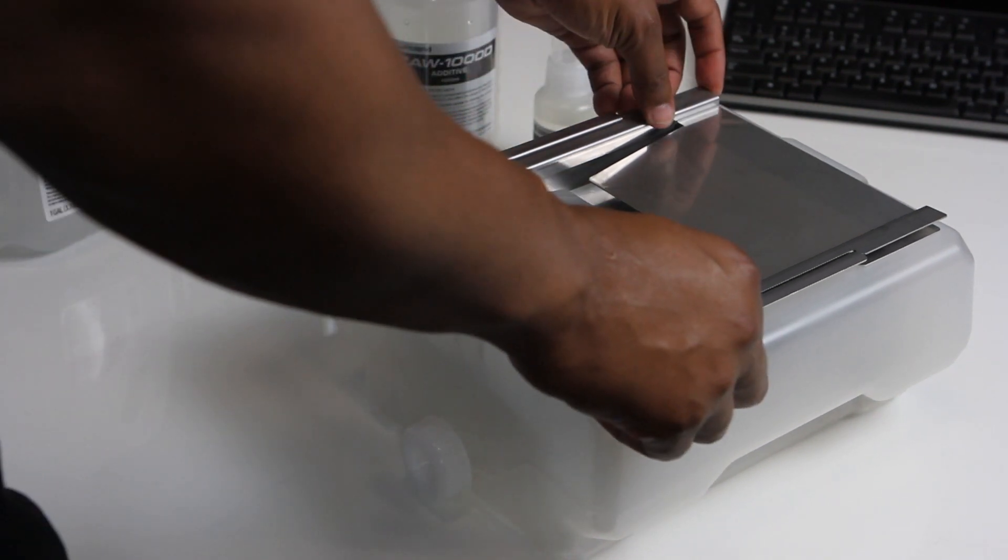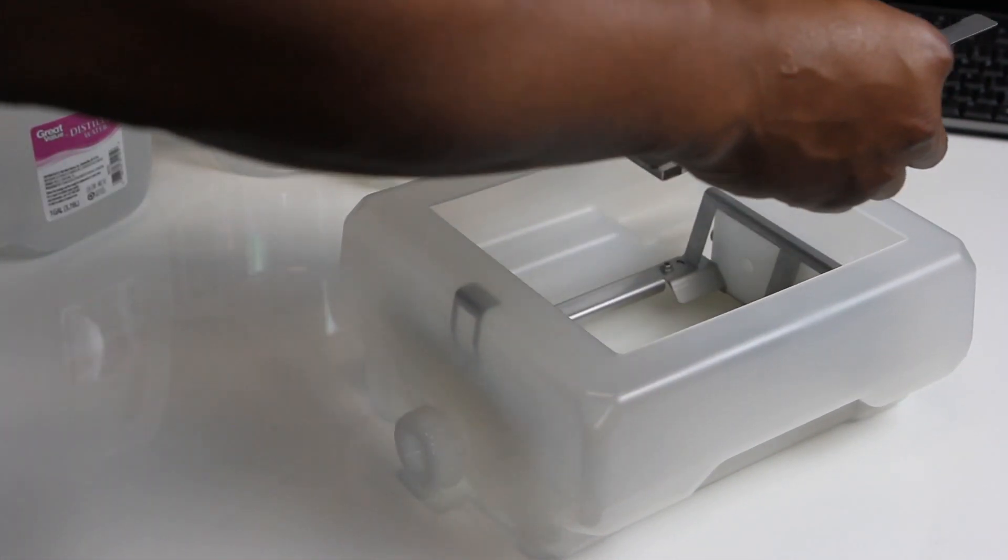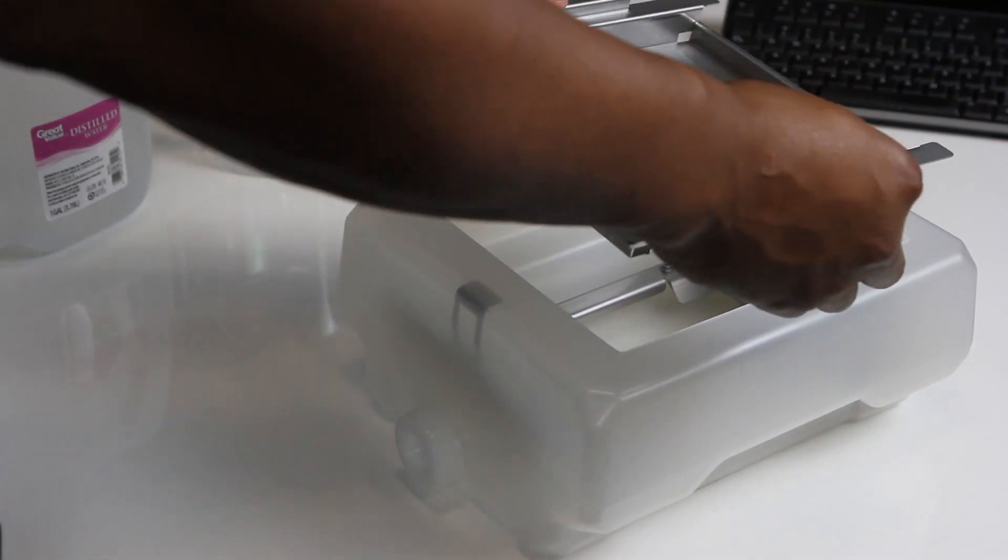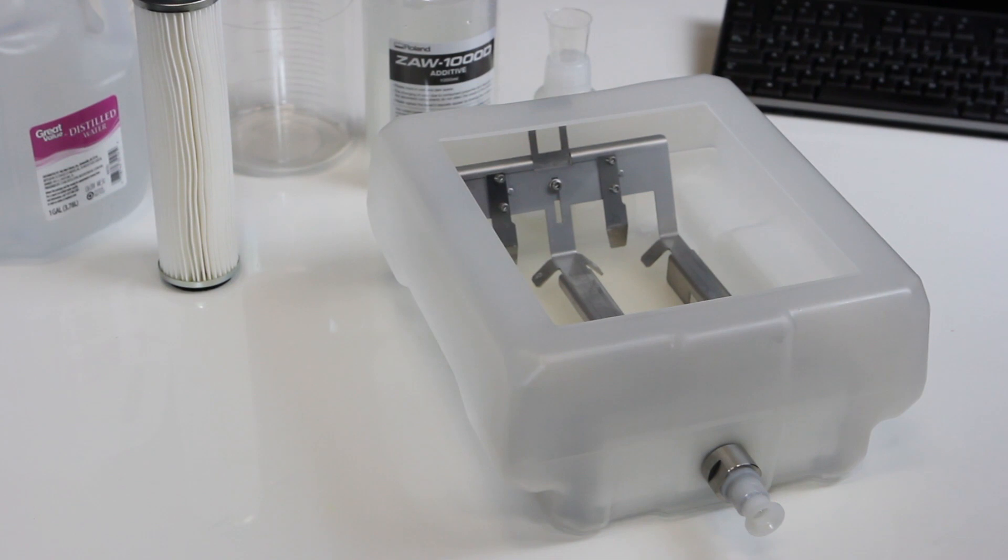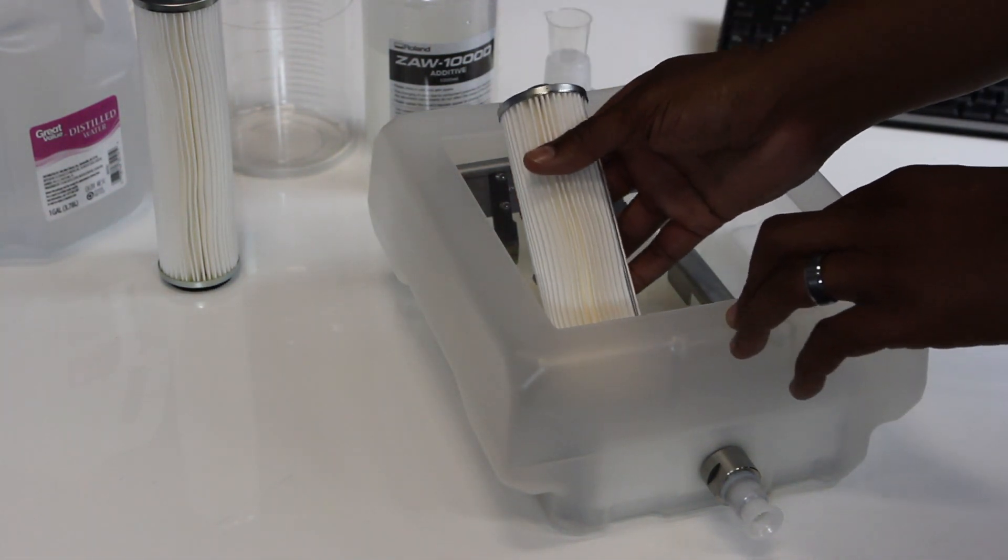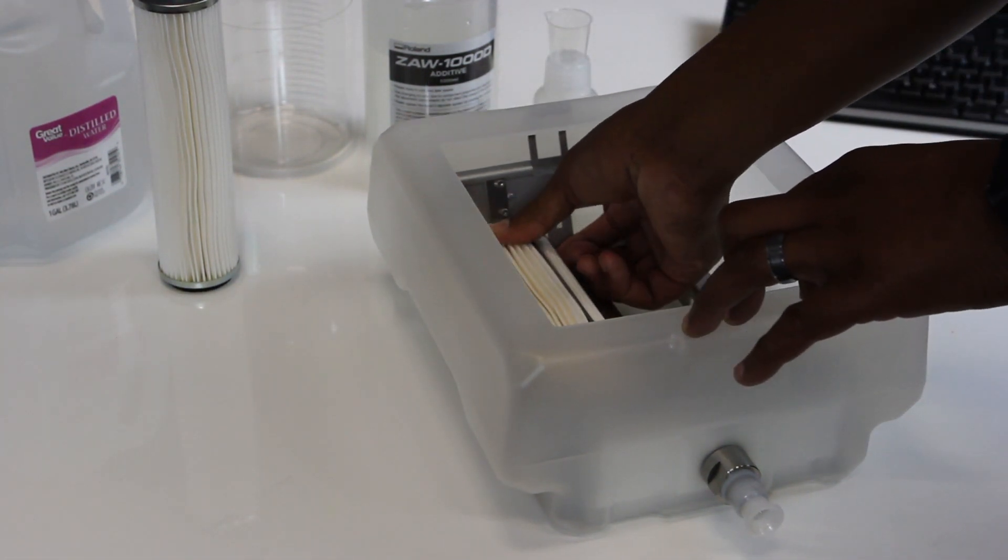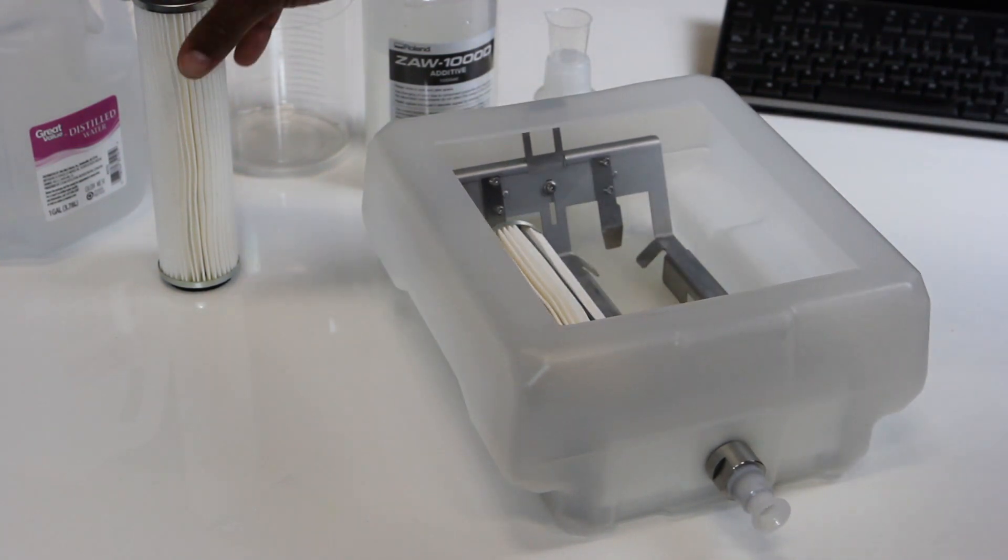Remove the tray lid, then remove the tray. Insert the coolant filters. Be sure the protrusion of the filter is facing the side of the tank with the coolant tap.